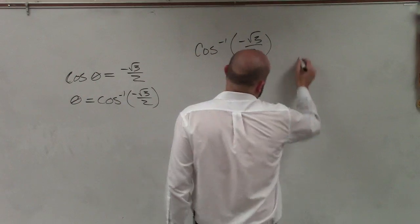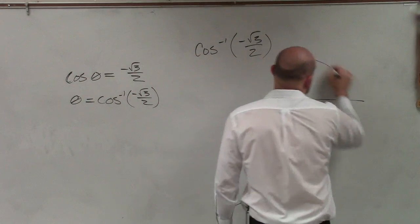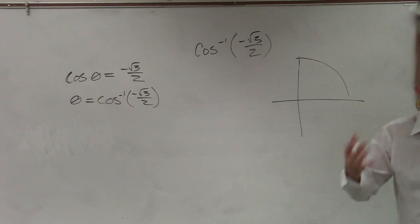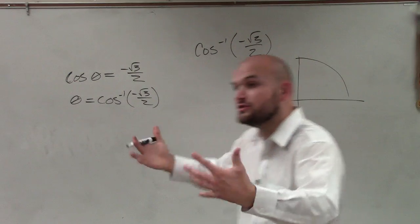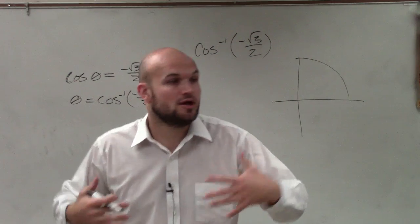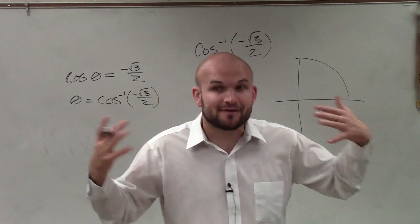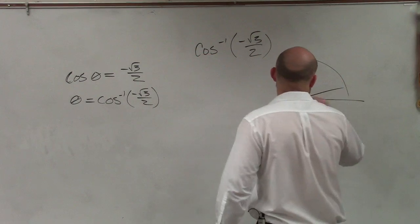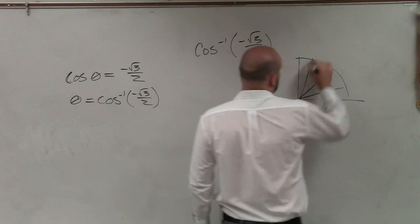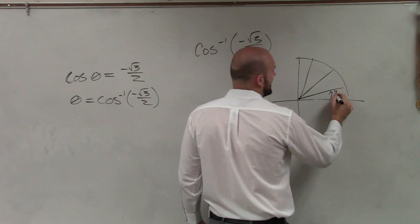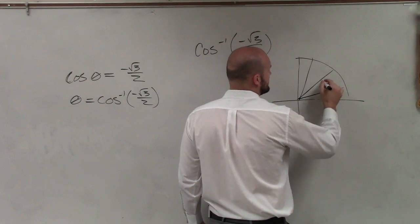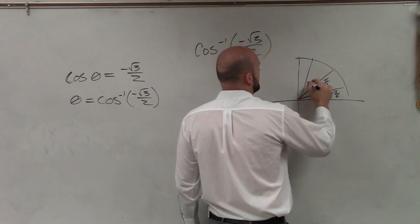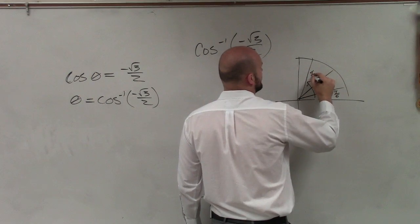I told you not to use your book or a unit circle, so go back and try to remember the unit circle. Throughout this course and at the end, you're going to have to know at least the first quadrant of the unit circle. I'll quickly create one here: we have pi over 6, pi over 4, and pi over 3.